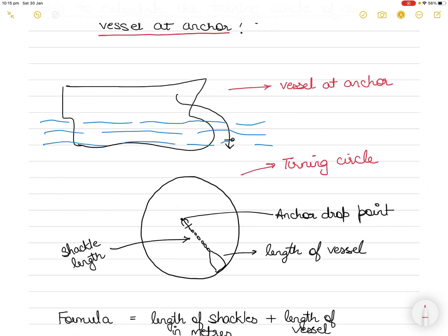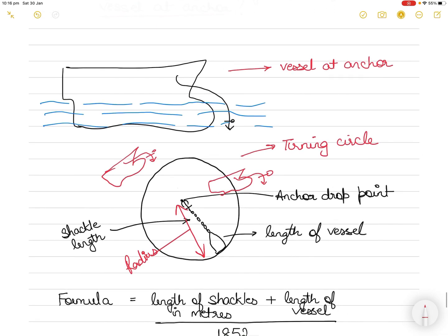Based on weather conditions, waves, current, and wind, the vessel will ride on its anchor and swing about in a circular fashion. We need to know the radius of that turning circle. This tells us whether other vessels anchored nearby are outside or inside the turning circle, so we know whether our vessel can safely ride to its anchor cable based on the turning circle calculation.